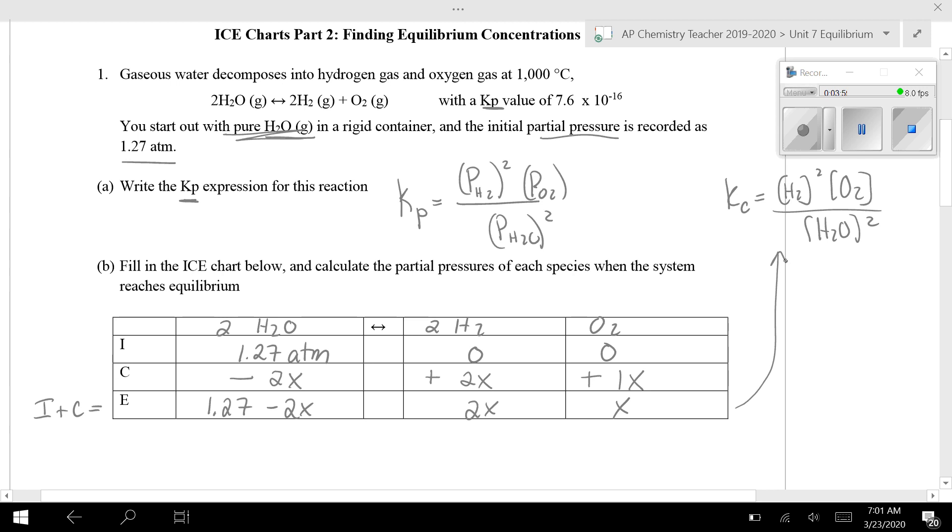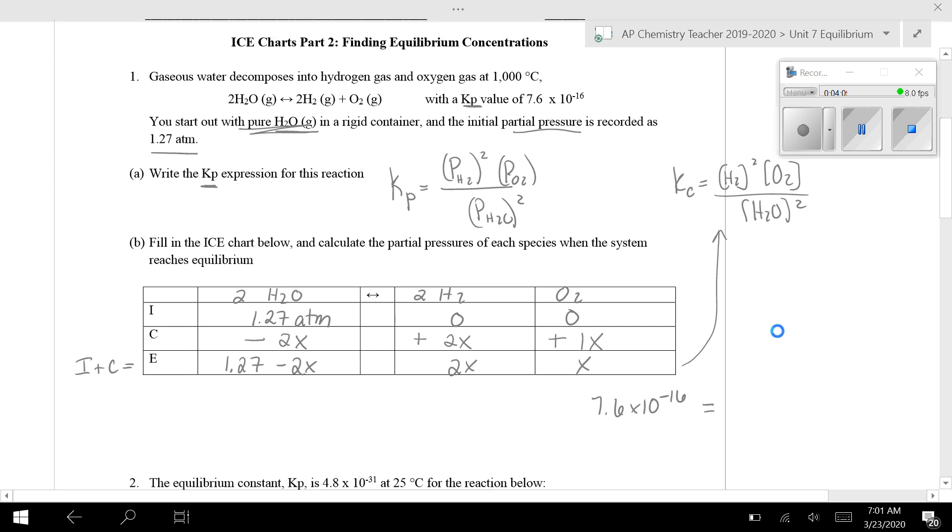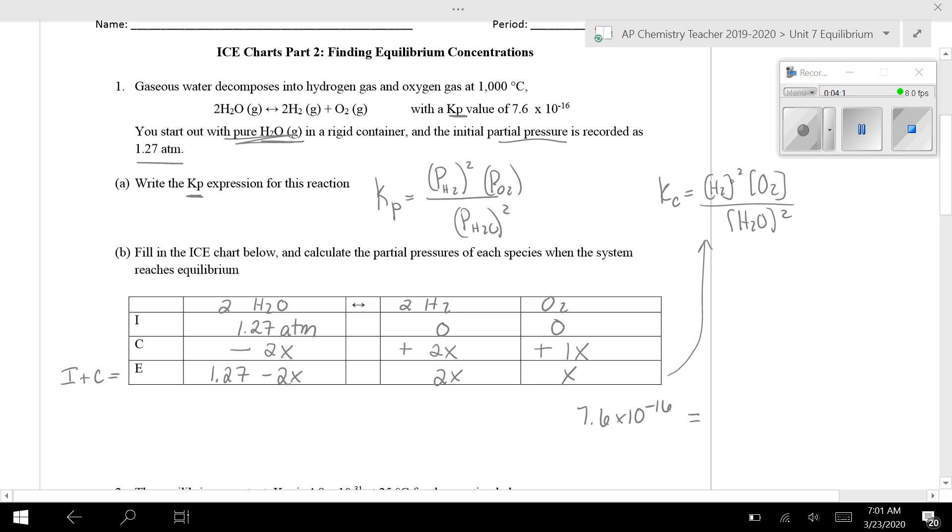And I do know the value of K. So if you look up at the problem, my value of K is 7.6 times 10 to negative 16. And I'm going to plug in my H2 squared. So that's 2X squared. And then O2 is X. And on the bottom is 1.27 minus 2X. And that whole thing gets squared.